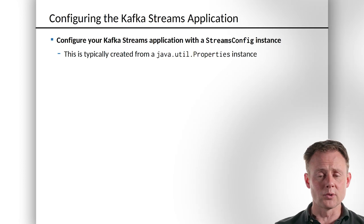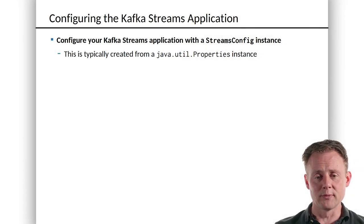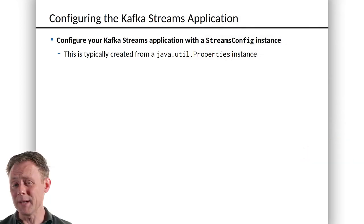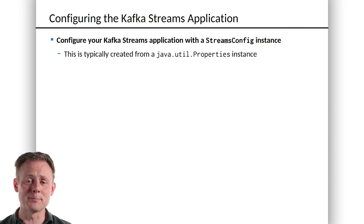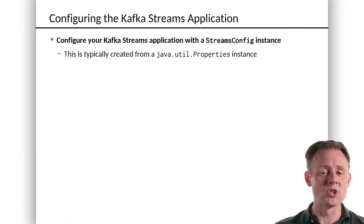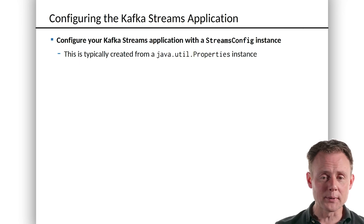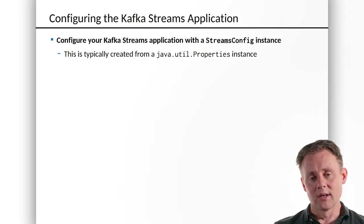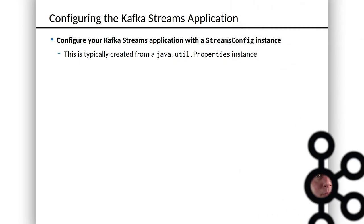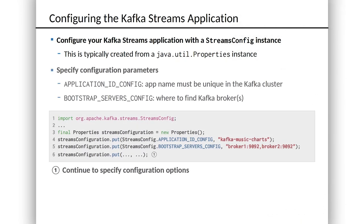If you've written Kafka producer or consumer code before, a lot of this will look strikingly familiar. If you haven't, that's okay, because it's actually pretty simple. We're going to start by creating a properties object, and we're going to fill it up with just a few parameters to get Streams off and running.